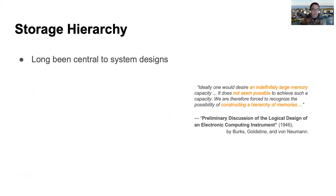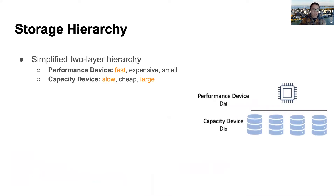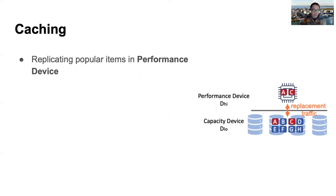Since the design of the first computers more than seventy years ago, storage hierarchy has long been central to system designs. Consider a simplified two-layer hierarchy to realize an ideal fast and large device to the users. Systems typically combine a fast performance device along with a slower but much larger capacity device. To manage such a hierarchy, caching is the most important and popular approach.